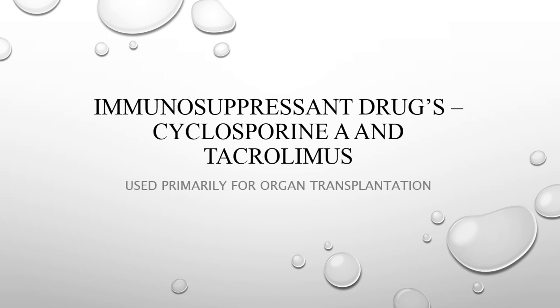For our next video lecture on immunosuppressant drugs, we'll be looking at primarily cyclosporine A, but also tacrolimus, or FK506, due to the fact that they both have an overlapping mechanism of action. Both of these drugs are used primarily for prevention of organ rejection post-transplantation. The interesting thing is that both of these drugs are very much structurally different — cyclosporine A is a fungal metabolite, whereas tacrolimus is a macrolide.